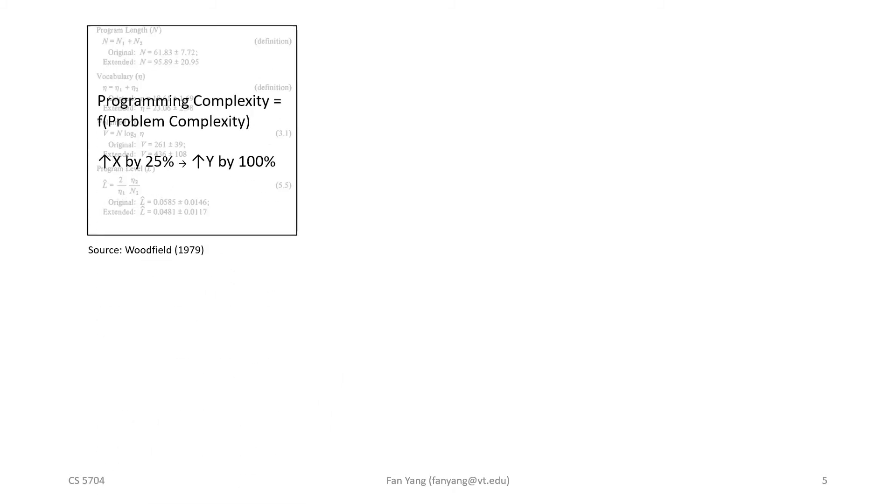Let me give you the executive summary of what he did. Woodfield starts off with an equation-based model that claims to relate problem complexity to programming complexity. These two concepts are encapsulated in mathematical expressions and related to each other in the form y is a function of x, where y is the programming complexity and x is the problem complexity. He shows that by increasing x by 25%, there will be a doubling of y.